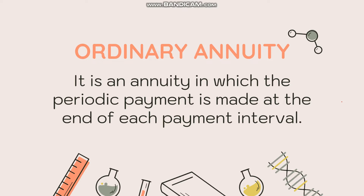Under simple annuity, ordinary annuity is one where the periodic payment is made at the end of each payment interval. For example, if you start renting a house on December 3 and pay monthly, your first payment under ordinary annuity will be made at the end of the first payment interval.